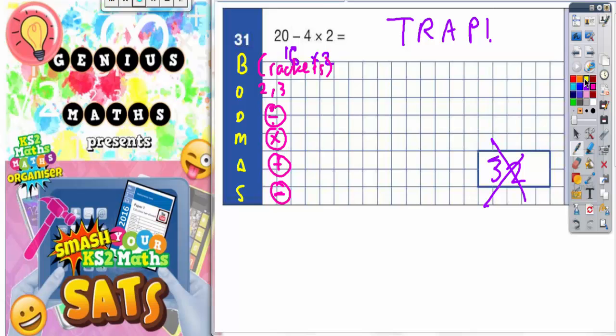At the top of the list you've got the B, so any brackets have to be done first. That's first on the list, highest priority. Any squared or cubed has to be done second, so that's second on the list.